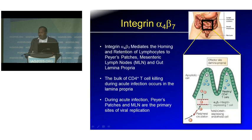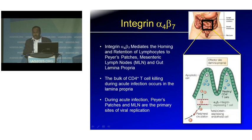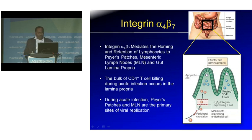In the gut, integrin alpha-4 mediates the homing and retention of lymphocytes to Peyer's patches, mesenteric lymph nodes, and the gut lamina propria. The bulk of CD4 T-cell killing during acute infection occurs in the lamina propria. During acute infection, the Peyer's patches and mesenteric nodes are primary sites of viral replication. So this molecule is involved in trafficking, and it is therefore very interesting to understand the biology of this molecule.